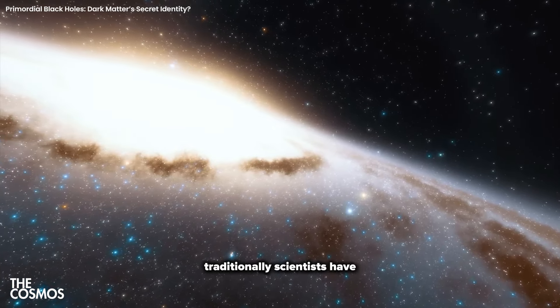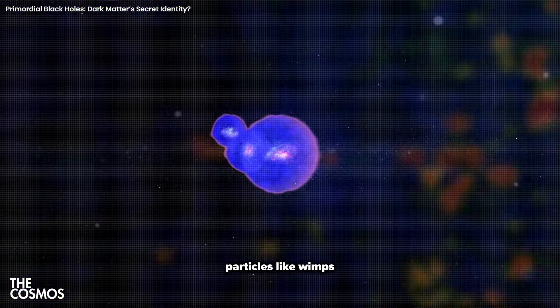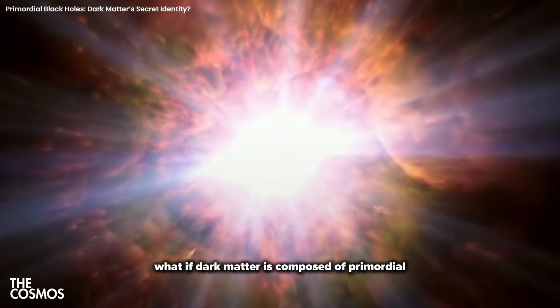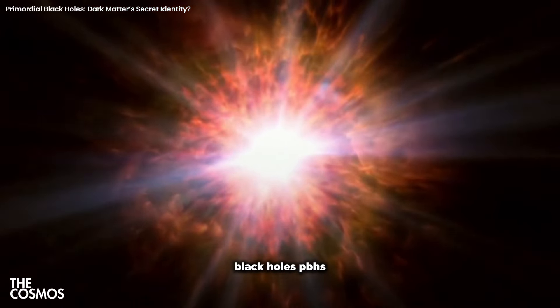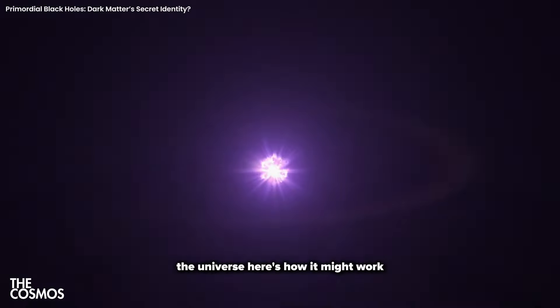Traditionally, scientists have theorized that dark matter might be made up of exotic particles, like WIMPs, weakly interacting massive particles. But bouncing cosmology offers an entirely different possibility. What if dark matter is composed of primordial black holes, PBHs, formed during a previous contraction phase of the universe?